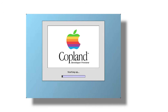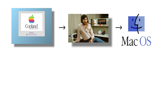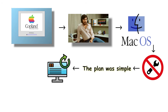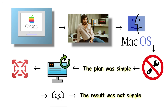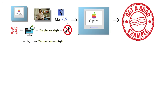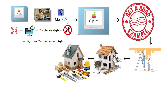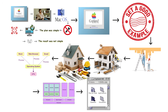Apple Copland was Apple's ambitious attempt to modernize the classic Mac operating system without replacing it entirely. The plan was simple: rebuild the system from the inside out while keeping full compatibility with everything that came before it. The result was not simple. Copland became the perfect example of what happens when a company tries to renovate a house while people are still living in it, using tools it has not finished designing. The goal of Copland was to introduce true multitasking, protected memory, and a modular architecture.